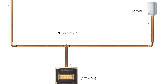That pipe will run to an appliance which needs 0.75 meters cubed per hour of gas. We're saying it's three meters long, and it's got a tee piece at point B where the gas changes direction, so we have to add 0.5 of a meter to allow for that tee piece. The length works out as three meters plus 0.5 meters equals 3.5 meters, and because we've got two appliances we multiply that length by two, which gives us seven meters. We need a seven-meter pipe which can pass 0.75 meters cubed per hour.